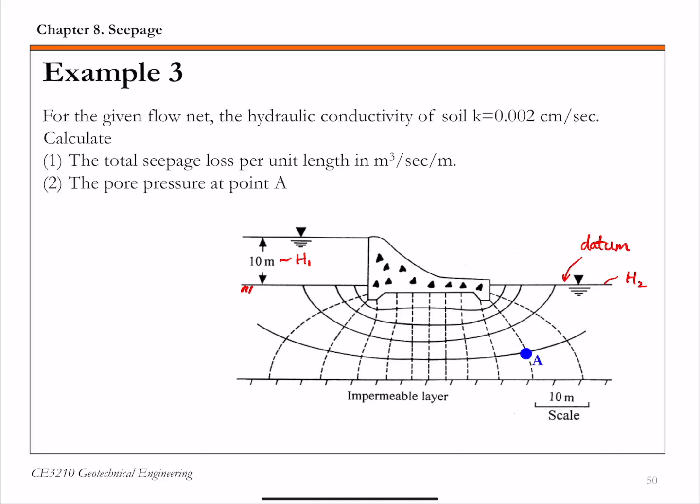So the total head loss, capital H, is H1 minus H2, and is basically 10 meters.